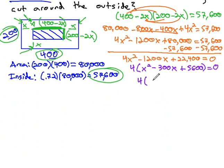So it factors to x minus 20 times x minus 280 equals zero.